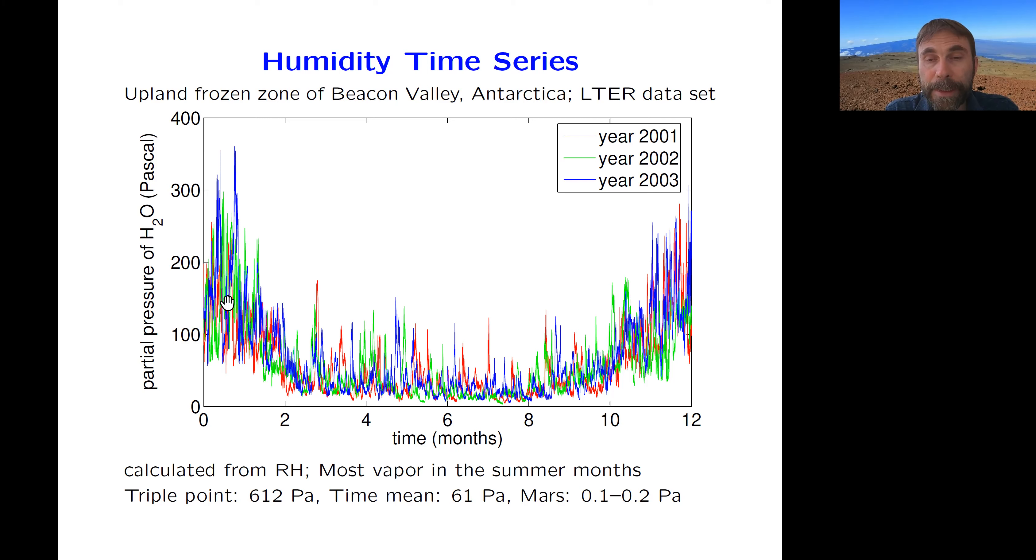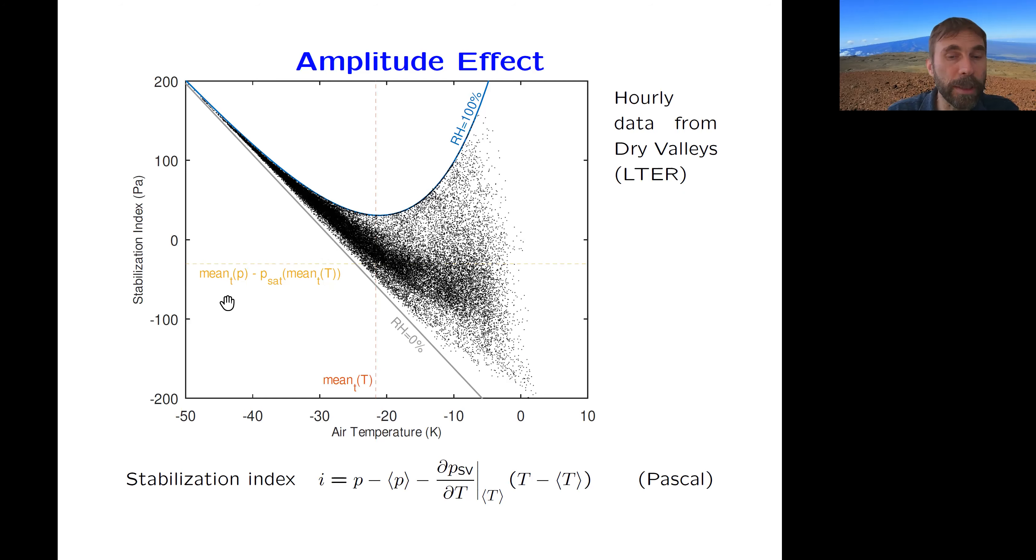And so one can, as is shown on the next slide here. So here I define a stabilization index that is partial pressure in the atmosphere minus the annual mean of that partial pressure in the atmosphere. So that's what increases humidity in the atmosphere. And subtracting from that is the increase of the vapor pressure of the ice table due to the temperature increase. So this is the heat contribution to the ice table relative to the mean value multiplied by the rate at which this temperature increases the partial pressure.